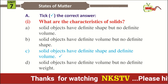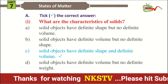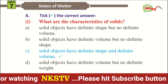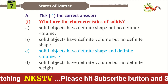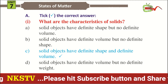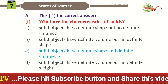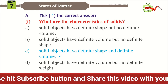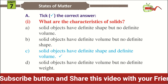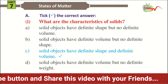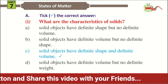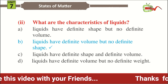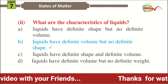The options are: A) solid objects have definite shape but no definite volume; B) solid objects have definite volume but no definite shape; C) solid objects have definite shape and definite volume; D) solid objects have definite volume but no definite weight. The correct option is C. Number two: what are the characteristics of liquids?